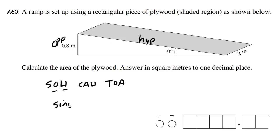So we say that the sine of the angle, which happens to be 9 degrees, is equal to the opposite, which is 0.8 meters over the hypotenuse. And we'll call this X.